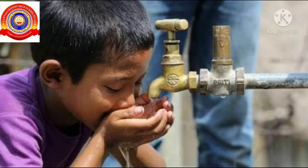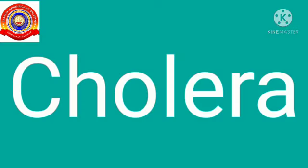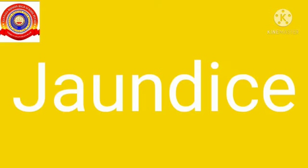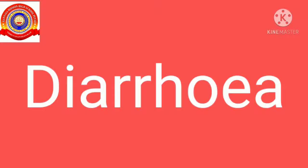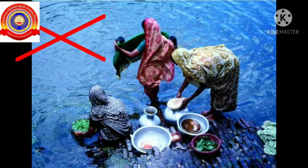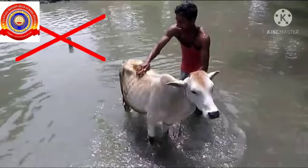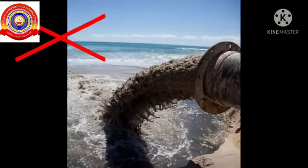Polluted water is unsafe for drinking. It may cause diseases like cholera, jaundice and diarrhea. To control water pollution, we should not wash dirty things near rivers or ponds, and factories should not release their waste materials into rivers.